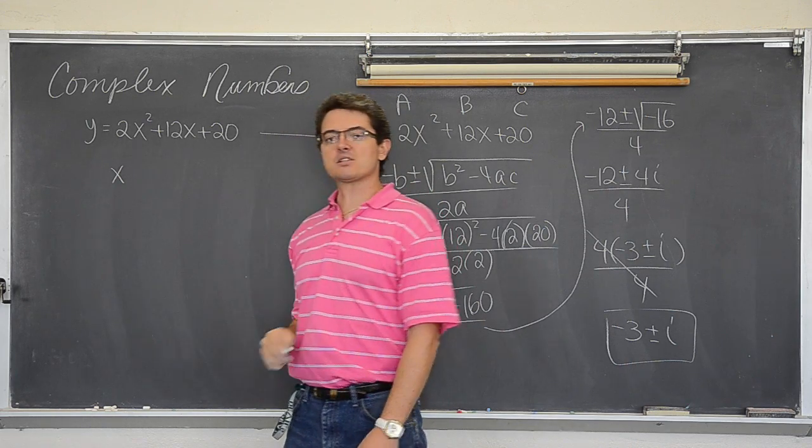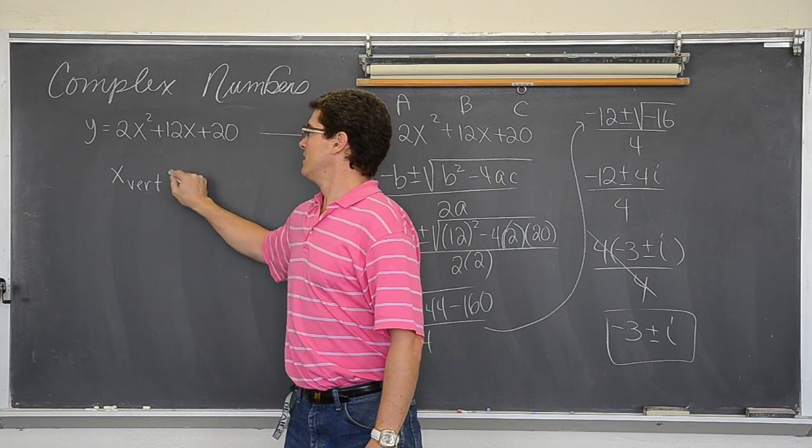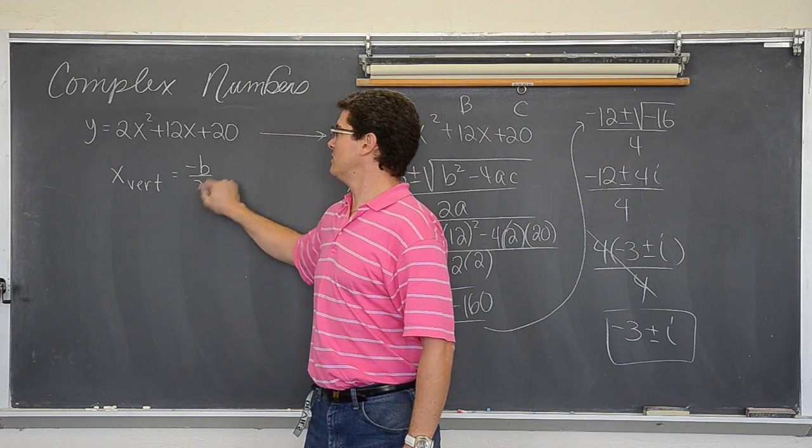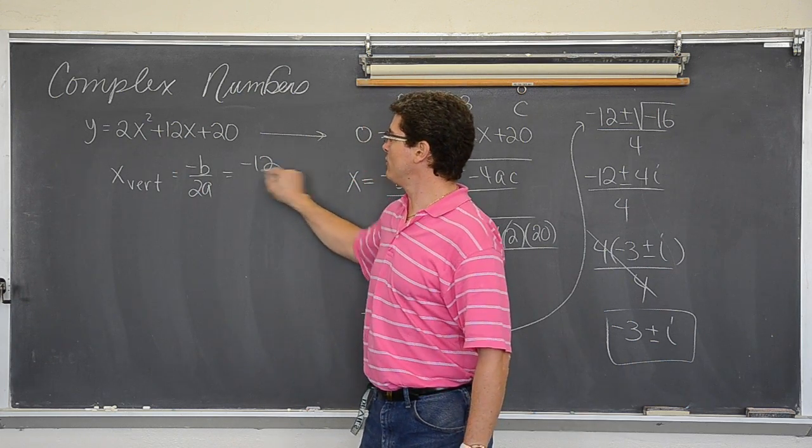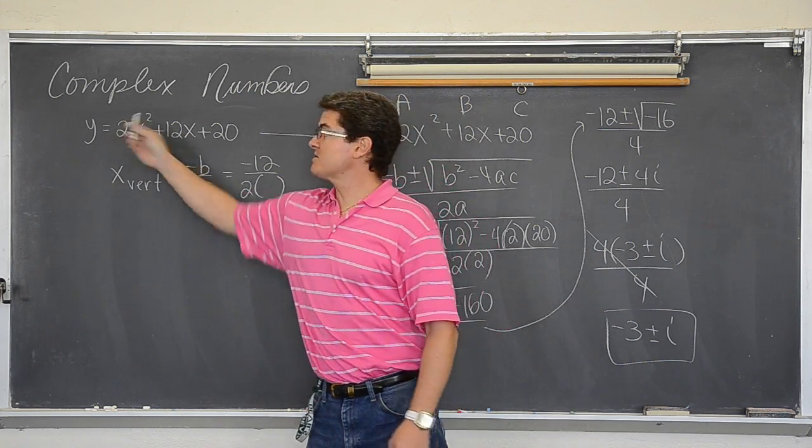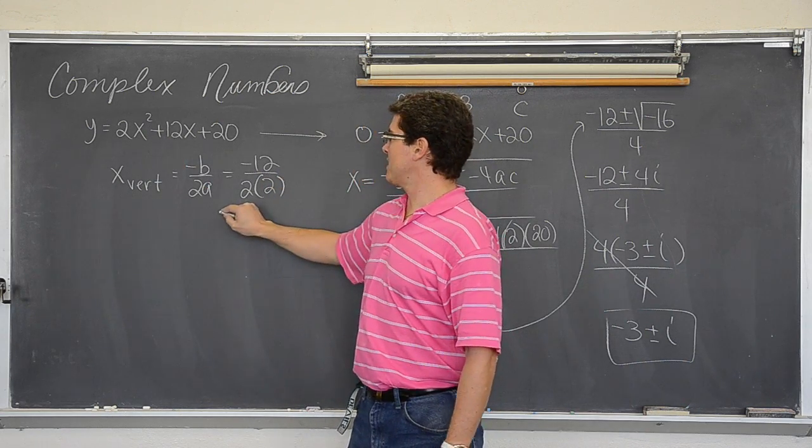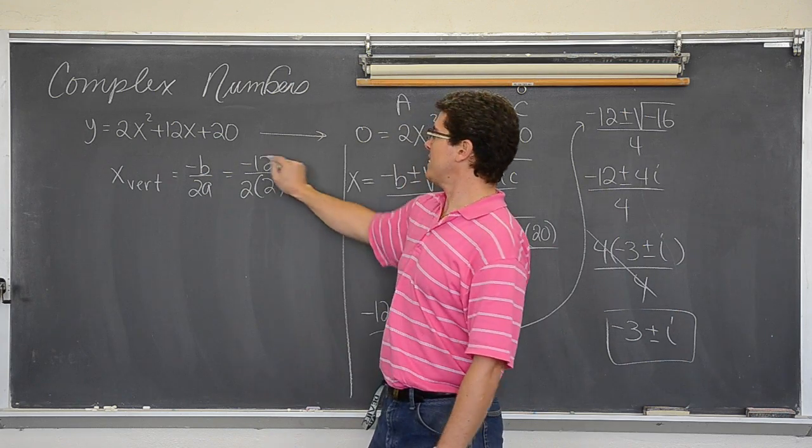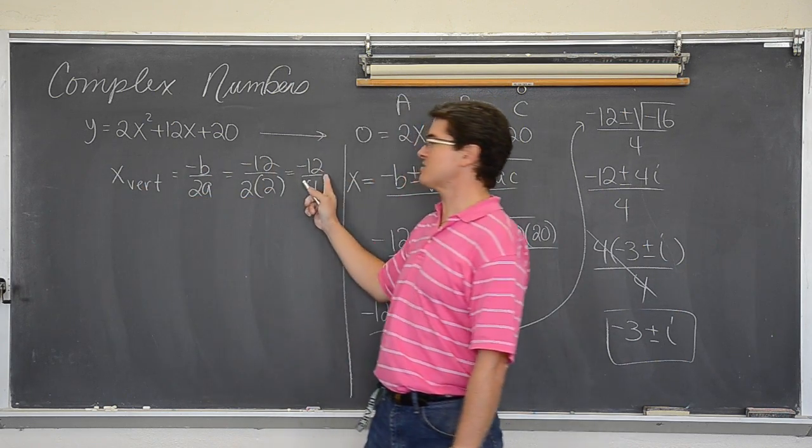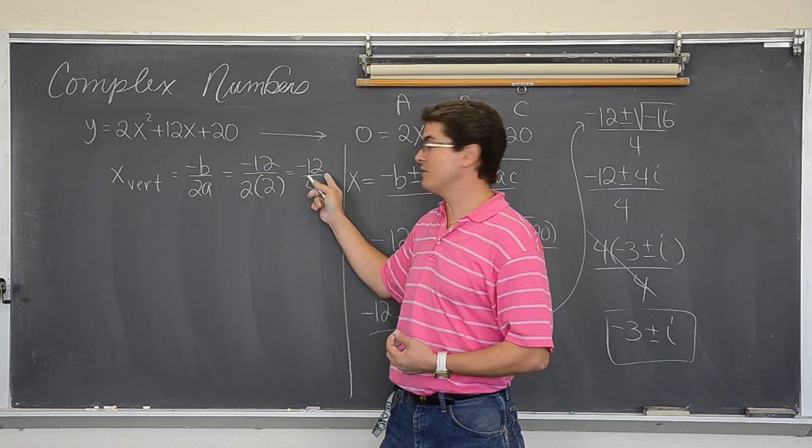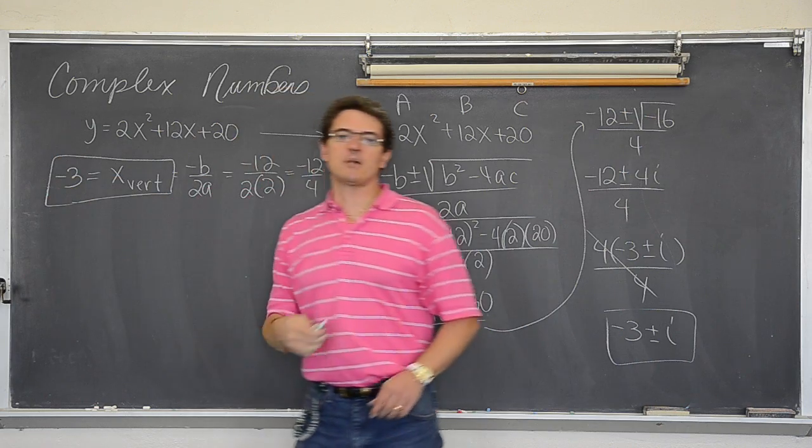If you want to find the x or the vertex of a parabola, the x-coordinate of the vertex is equal to negative b over 2a. Well this is b so negative 12 over 2 times a. a is the leading coefficient. a in this case is 2. So this becomes negative 12 over 4. So the x of my vertex is going to become negative 3. I am just going to write it over here because I am running out of space. So this is the x of my vertex.